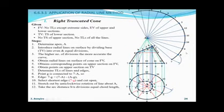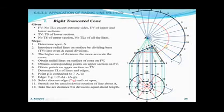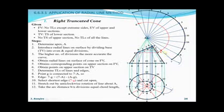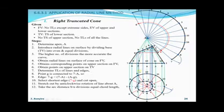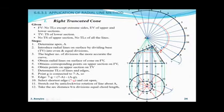Now locate point G on the development. Take the radius from the apex to G and scribe an arc along the radial line seven — this locates G. Then locate F and H: F is on line six and H is on line eight. Use the respective true lengths from the apex to scribe their positions.